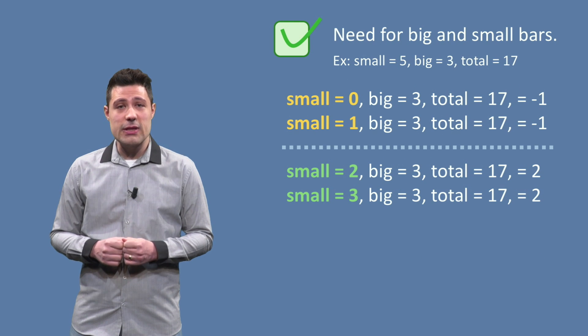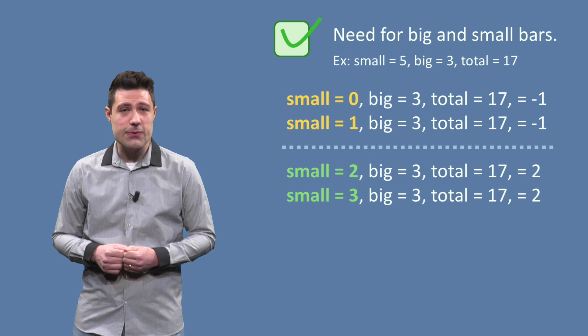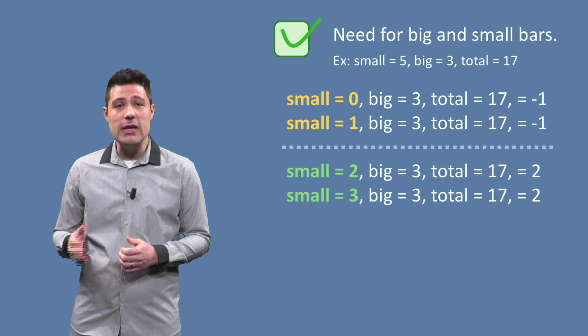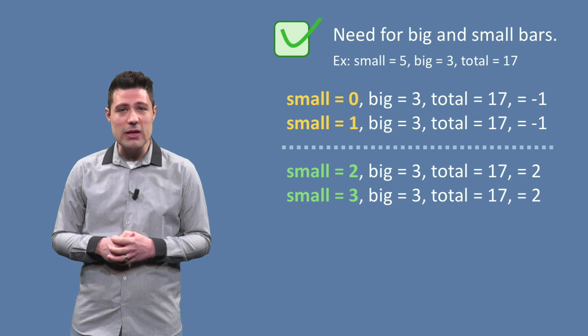If we get to the partition that started all this discussion, need for big and small bars, we see that the boundary happens when we can't use big and small bars. In this example, when small is between 1 and 2.